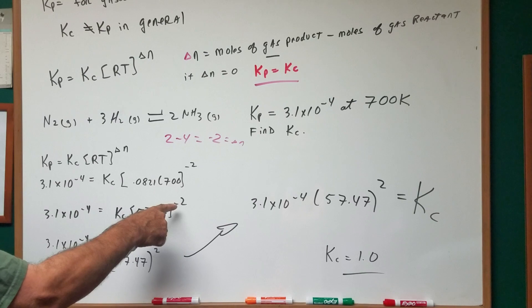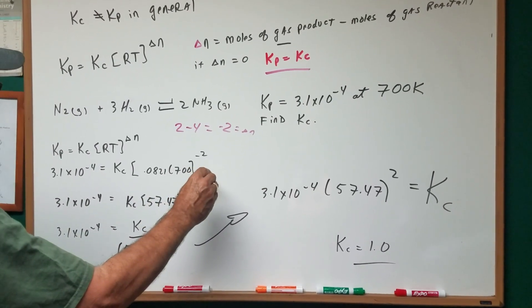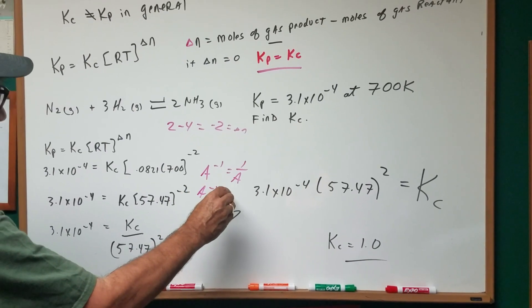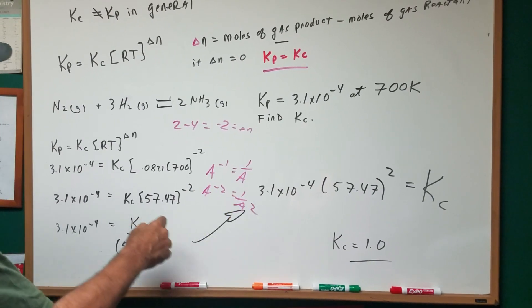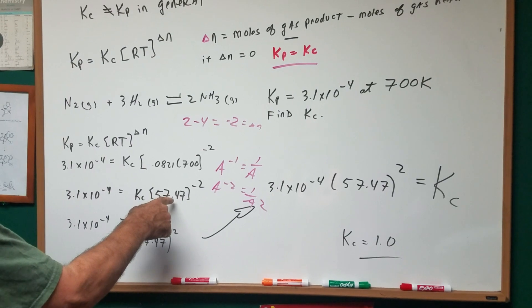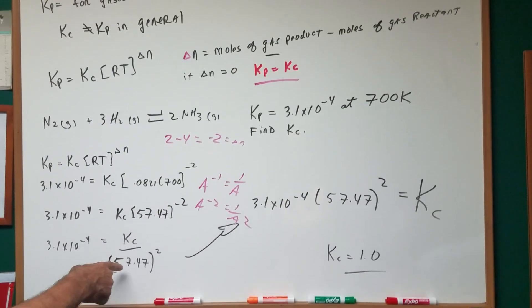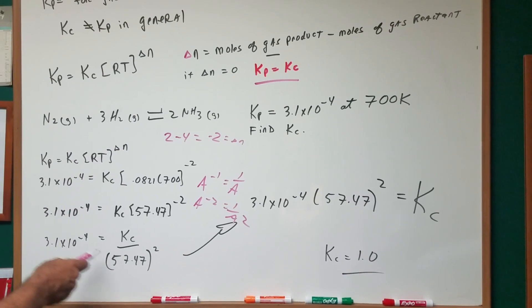There's the KP. Anything to the negative power, if you remembered, A to the minus one is one over A. A to the minus two is one over A squared. So 57.47 to the minus second power, you put it in the denominator squared.